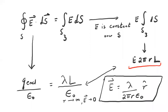Final point: the linear charge density goes like coulombs per meter, and R in the denominator goes like meters. So the electric field has the right units and goes like 1/r — consistent with what we expect for an infinite line charge.